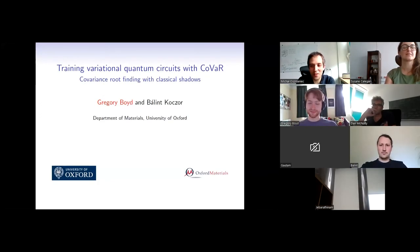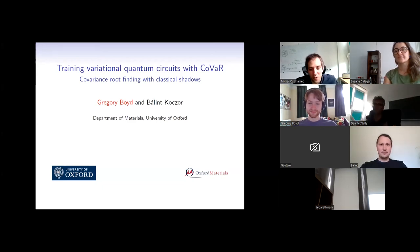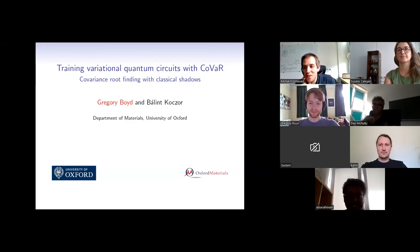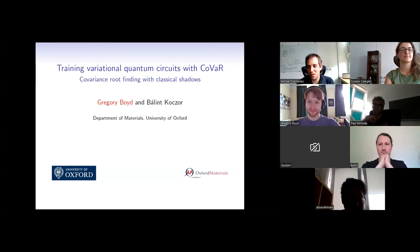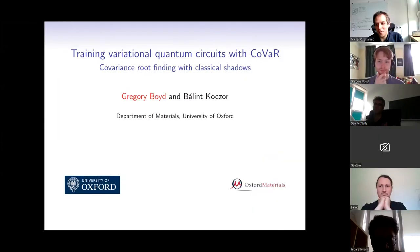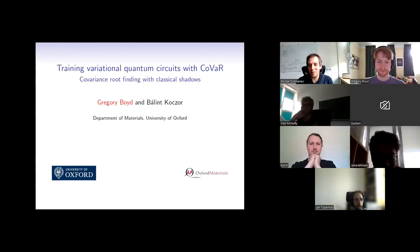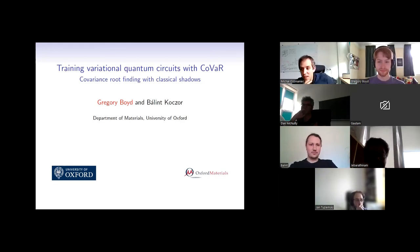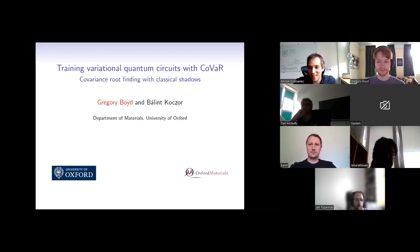Welcome, everybody. It's my pleasure to introduce today's speaker. We have Gregory Boyd from the University of Oxford. Gregory is a PhD student in the group of Simon Benjamin, and he works on theory of near-term quantum computers. Today he'll be telling us about his recent work on application of classical shadows to learning on variational circuits. So this is a very exciting subject. Great to have you, Gregory. The screen is yours.